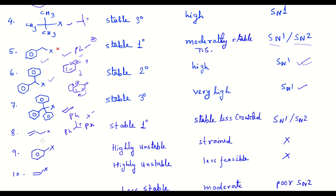For allylic halide, the electronic stabilization from the vinyl system stabilizes the transition state via the p orbitals of the pi bond, giving SN2 reactivity. The allylic carbocation can also be stabilized via resonance for SN1. Therefore both SN1 and SN2 are possible for allylic halides, and the reaction pathway is selected based on the choice of suitable solvent.